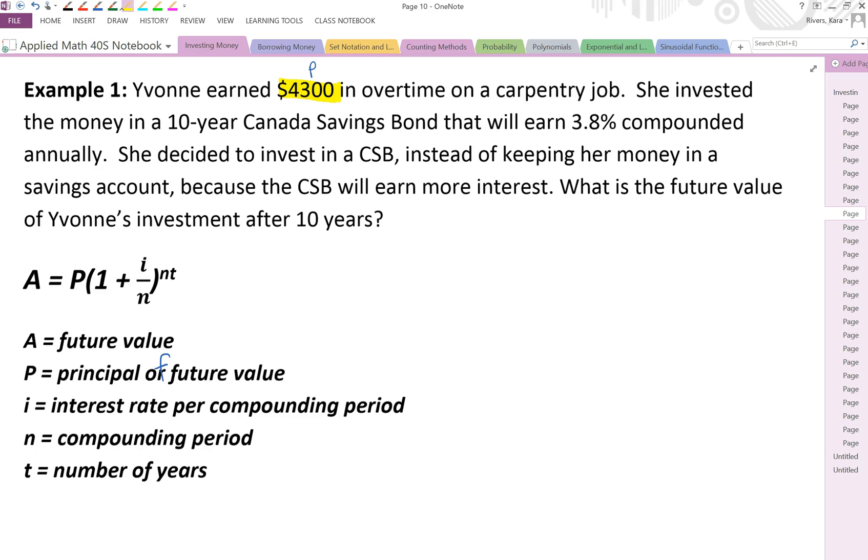So we've got $4,300 being earned and that's what Yvonne is going to put into the investment so we'll call that our principle. Now she's invested in a 10 year Canada savings bond because that's the term, that's the amount of time that that investment is going to take to earn interest we're going to call that T. However unlike our simple interest we're also going to compound our interest every year. So that's this 3.8% compounded annually which means we're going to take that interest that we earn every year put it back in as the principal and then gain interest on that amount. So the 3.8% is our interest rate and then the compounded annually tells us that our N value is equal to 1. Don't forget to change your interest rate to a decimal place so that would be 0.038.